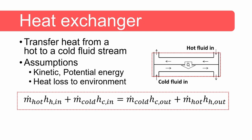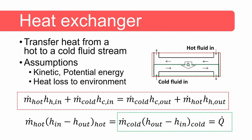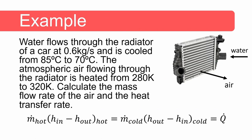Energy enters the system with the hot fluid in and also with the cold fluid going in. The sum of these two energy terms is equal to the energy leaving the system with the hot fluid and the cold fluid. After some rearrangement, the resulting equation is shown in the green box and is equal to the rate of change of energy of the hot fluid.